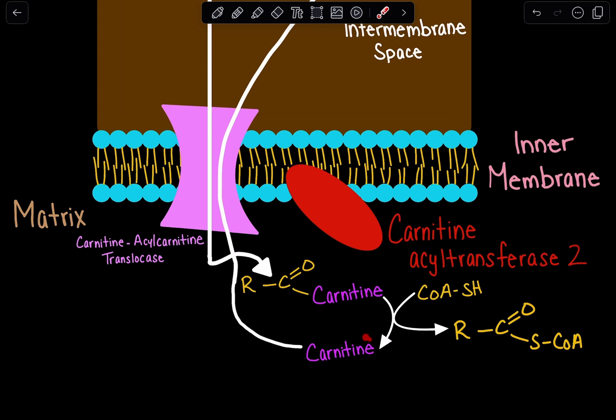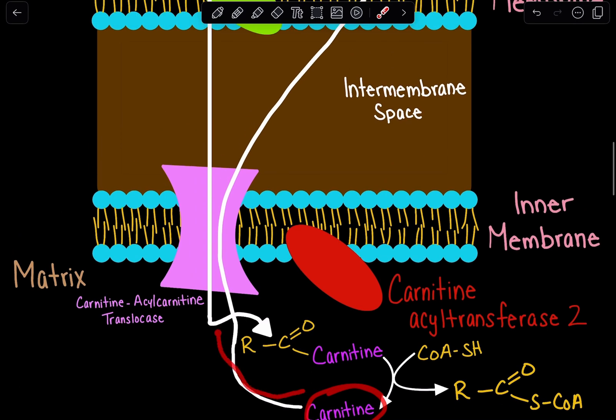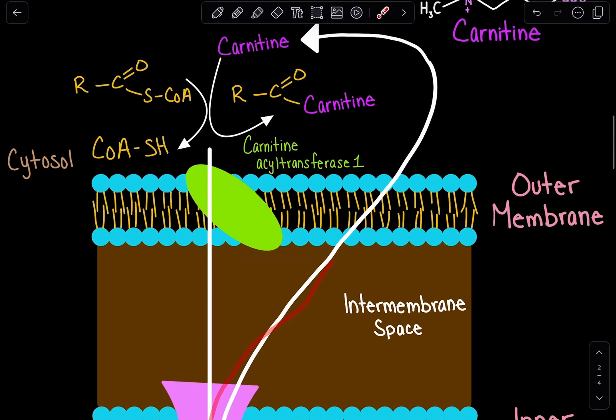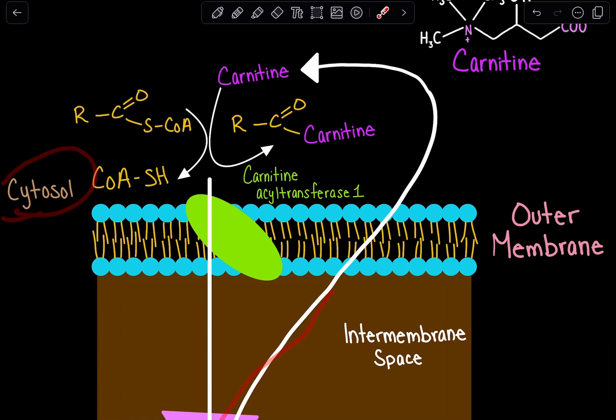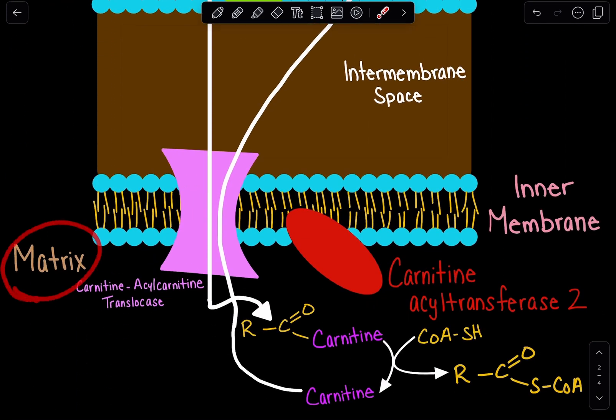What happens to the carnitine that was just split off acyl-carnitine? This carnitine is actually going to go back through the transporter, back out to the cytosol, and it's going to undergo that same reaction again and bring another fatty acid into our matrix.